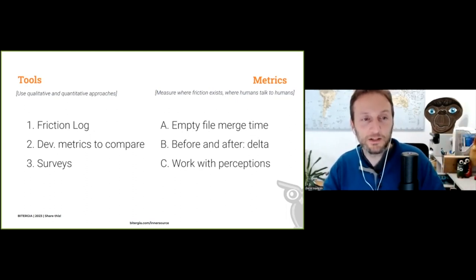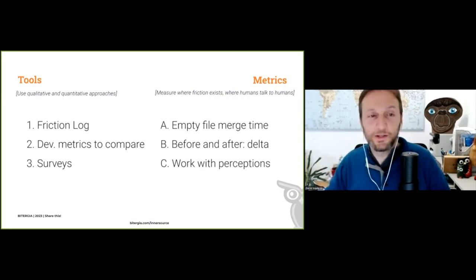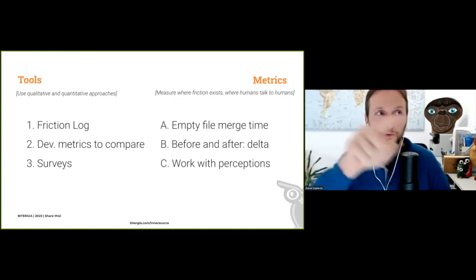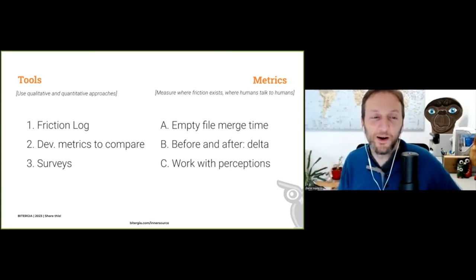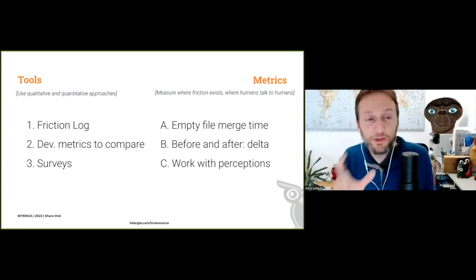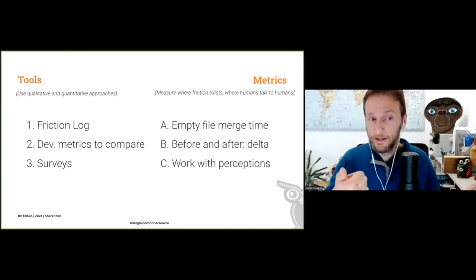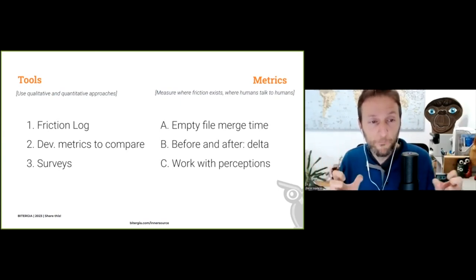Something that has been really useful is friction logs — ask someone to try to contribute an empty file to a different business unit, and write down all the steps: 'I need to call this person, go to her desk...' Some numbers I've seen show it takes more than a month to get an empty file contributed to a project that wasn't open before. With a friction log, we hold a mirror in front of everyone. Development metrics allow a quantitative approach, and surveys capture people's perceptions.